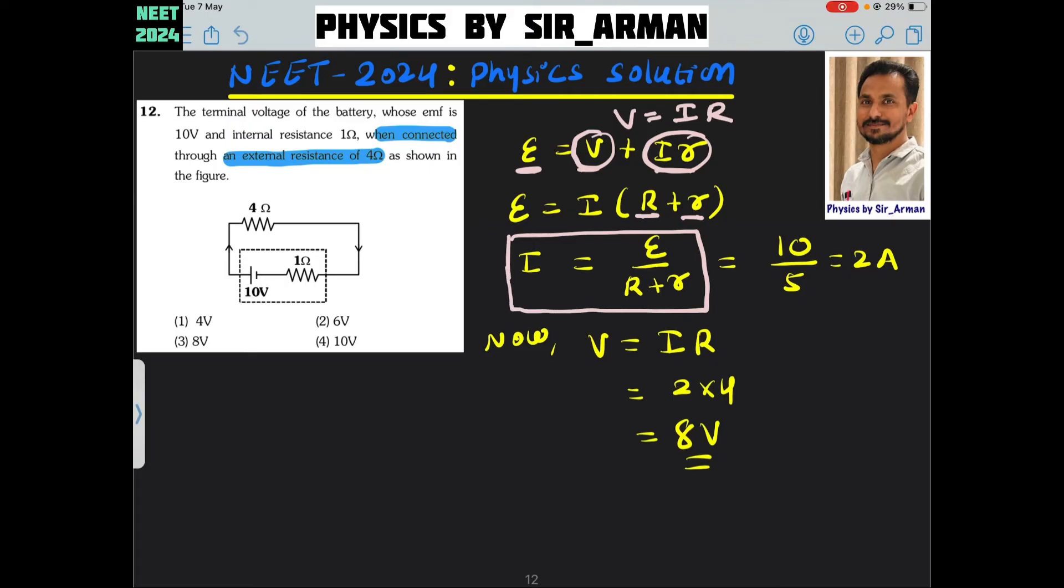If someone fails to remember this equation then you can derive like this. The current will be total EMF by total resistance R plus r.